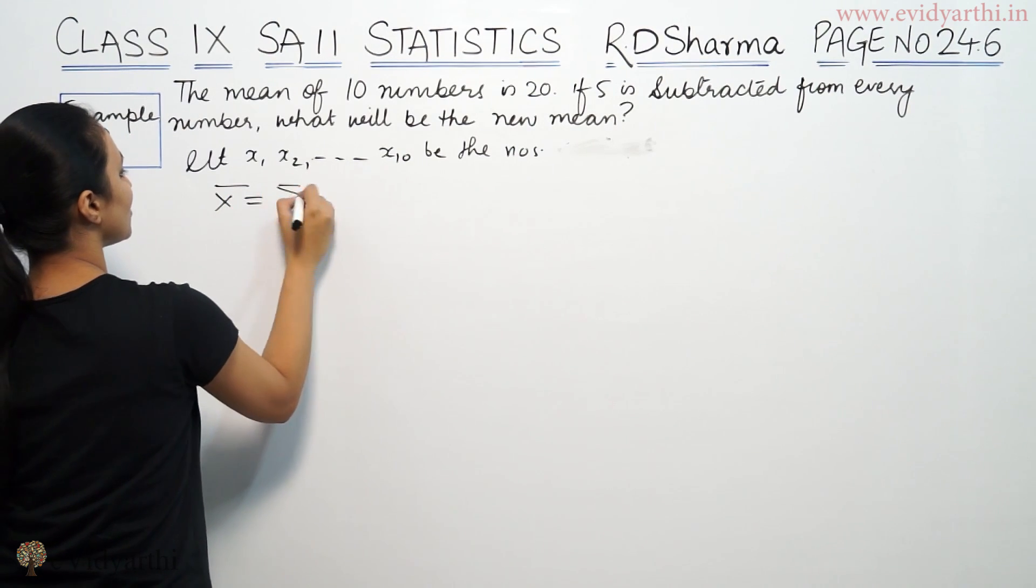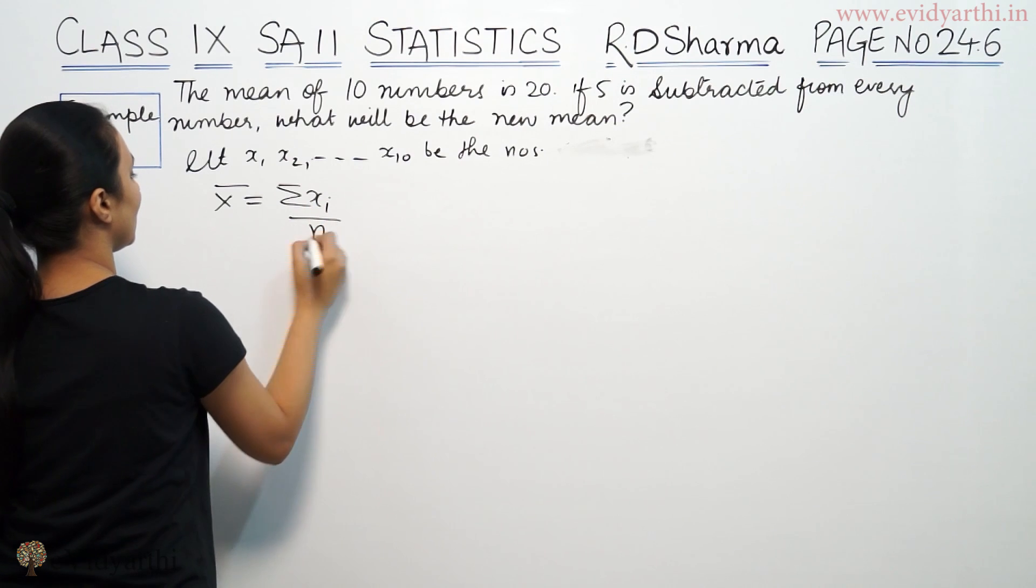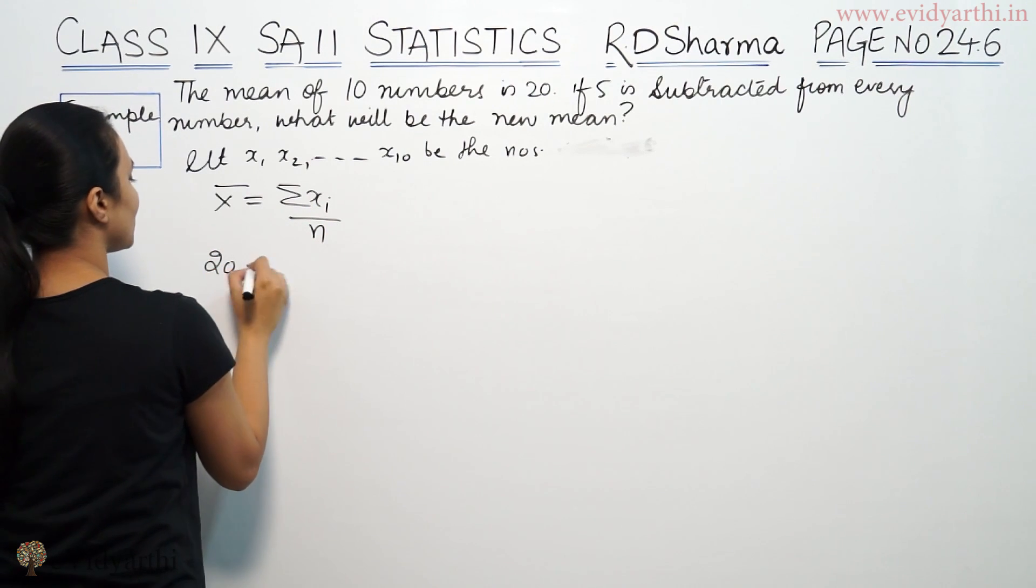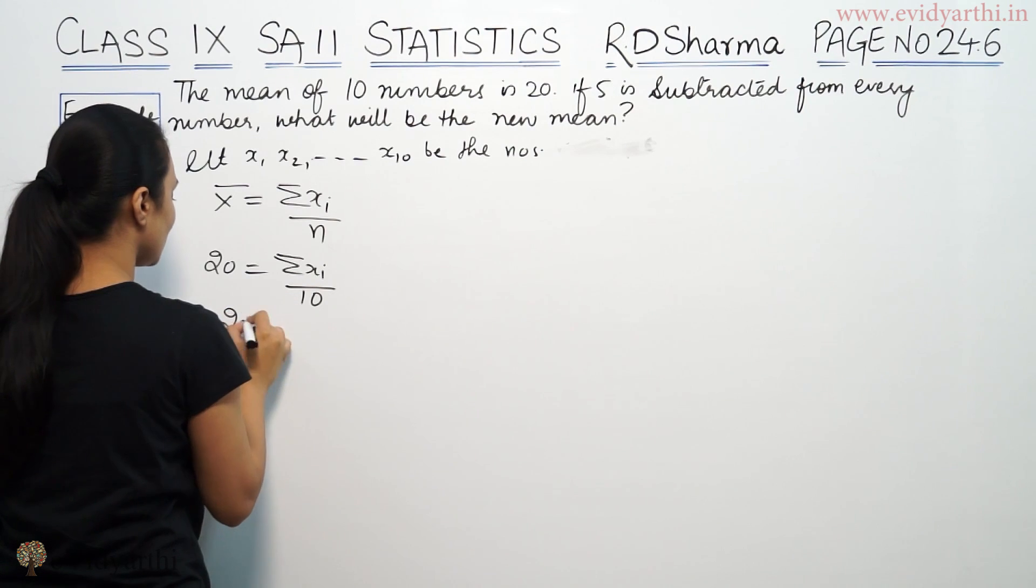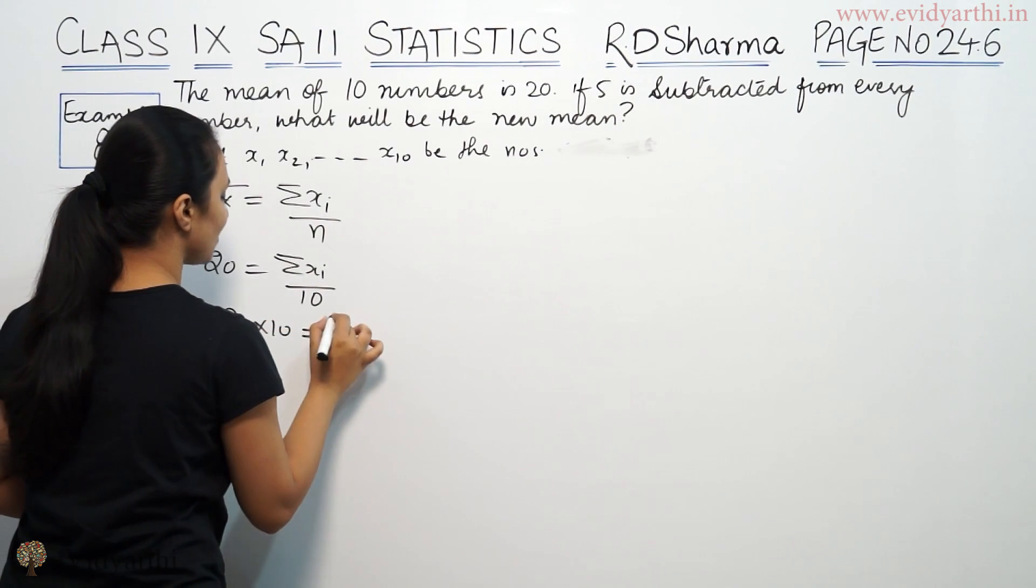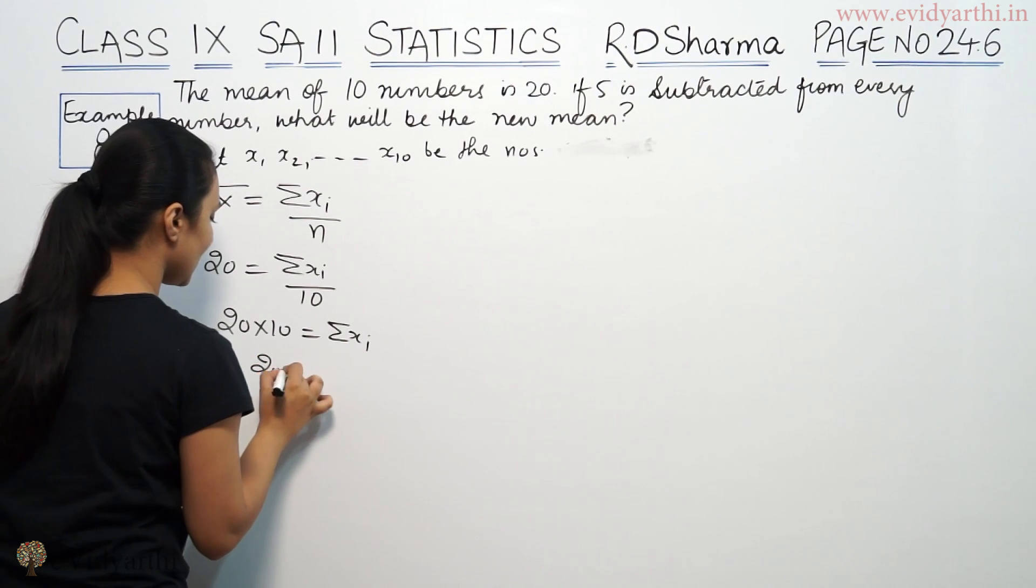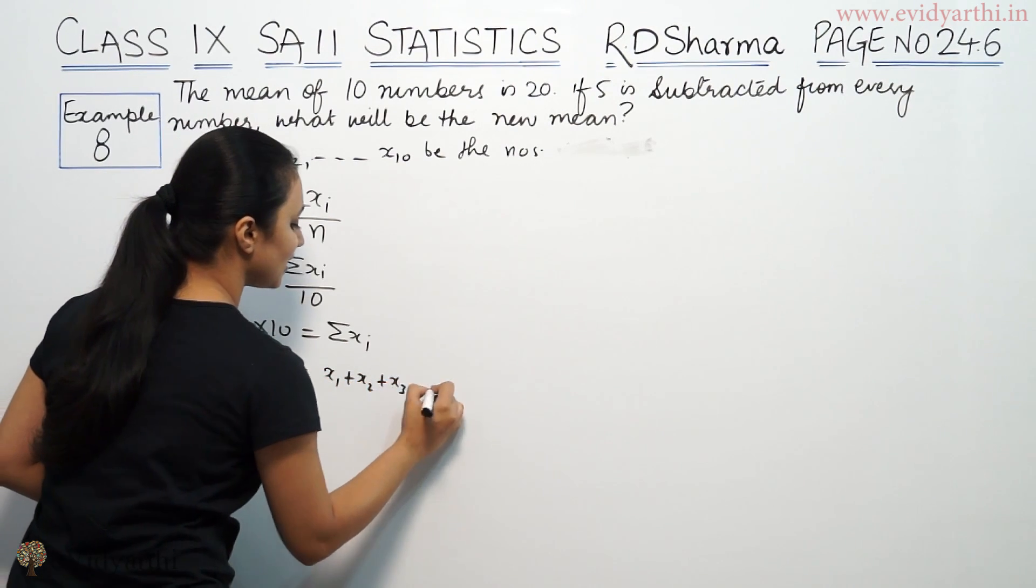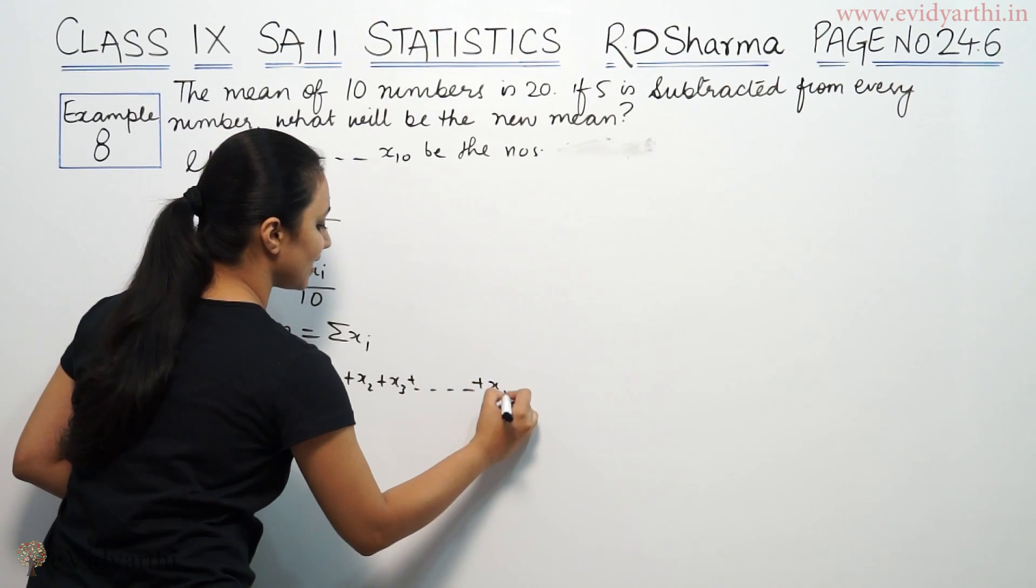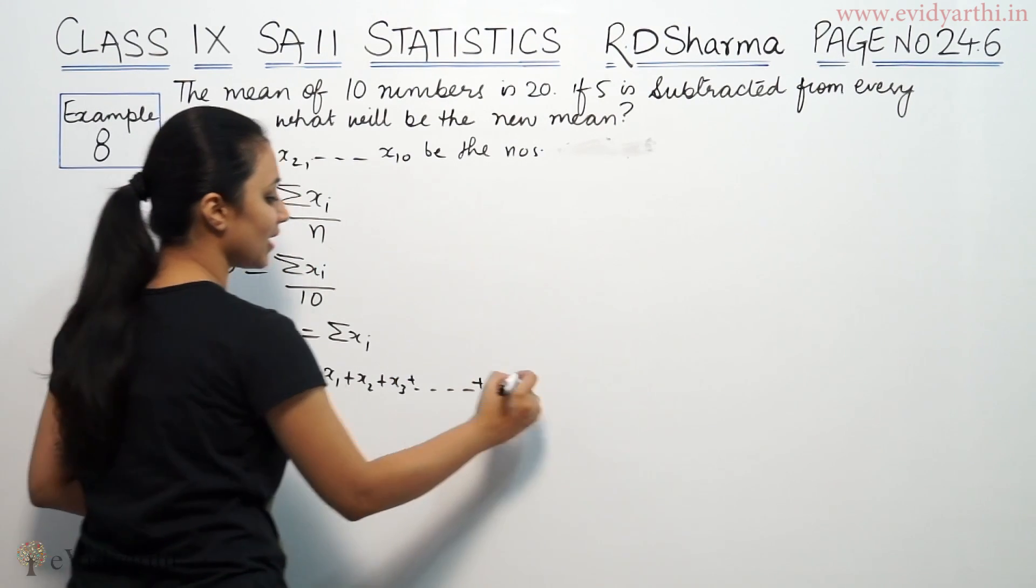So mean humare paas ∑xi/n. Humare paas hai 20. This is the given mean of 10 numbers. That means 20 × 10 = ∑xi. That means 200. ∑xi means x1 + x2 + x3 dot dot dot plus x10. The sum hai 200.